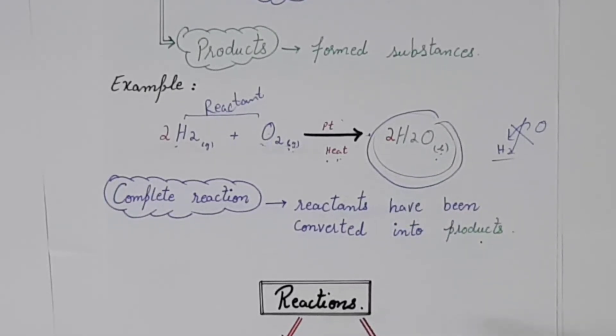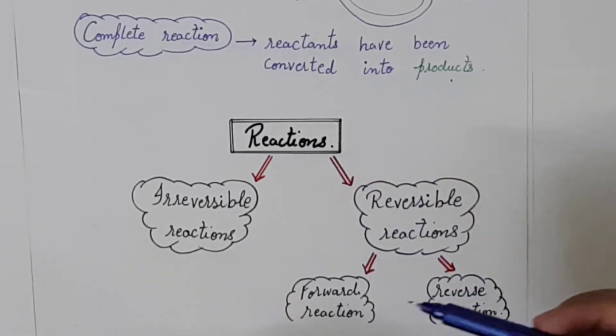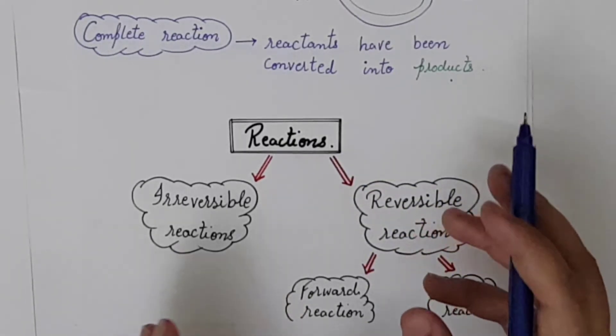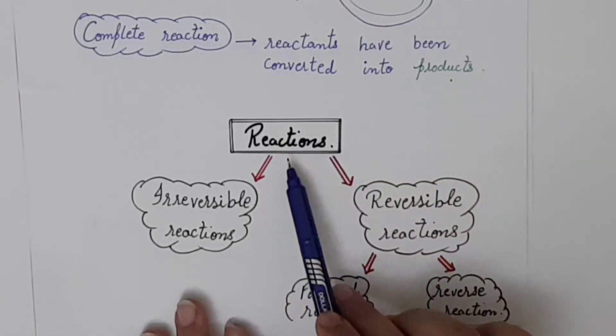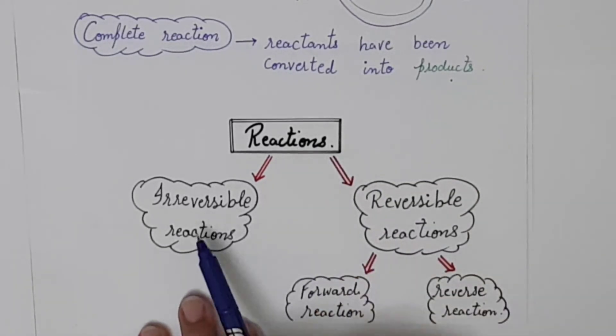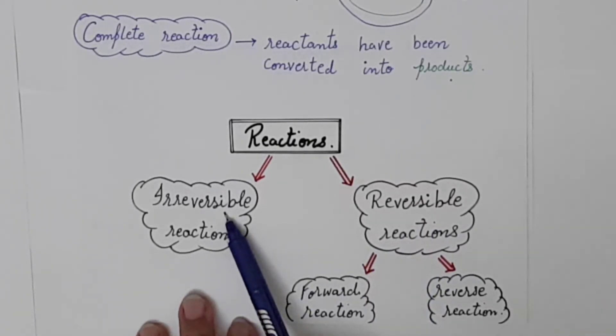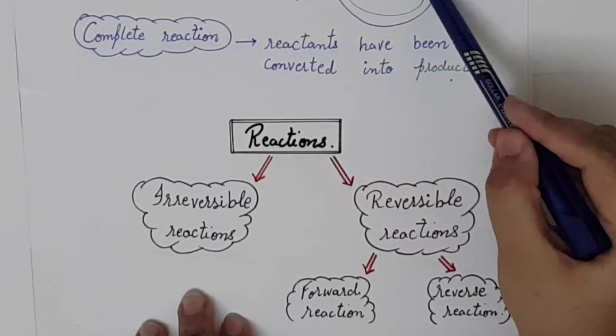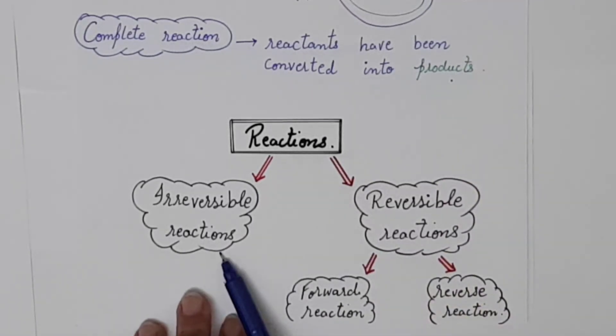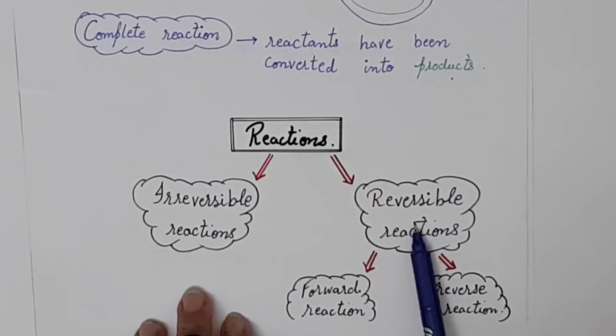Now, if we move on to the reactions. What kind of reaction do we see, we observe in nature? In nature, there are two types of reactions. Number one is irreversible reaction. Number two is reversible reaction. In the name, you have to know the reactions that give complete products, like you have in the water example. We have seen it. It is irreversible reaction.